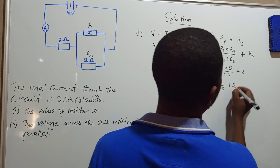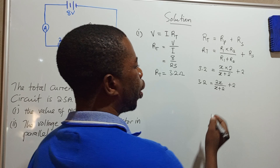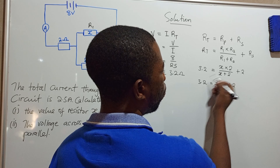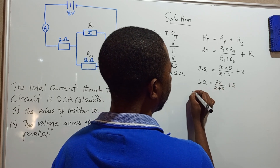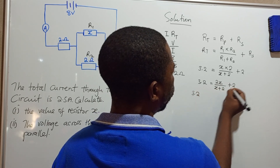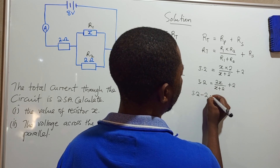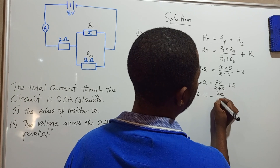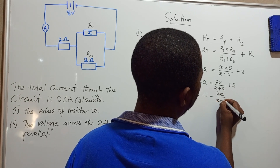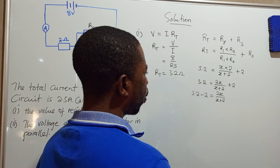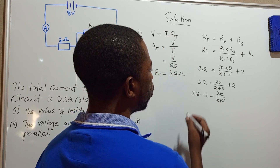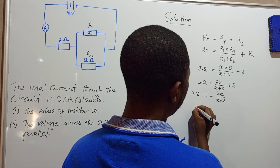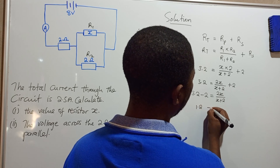Now we collect like terms. The 2 moves across and becomes minus 2, so 3.2 minus 2 equals 2X over X plus 2. That gives us 1.2 equals 2X over X plus 2.